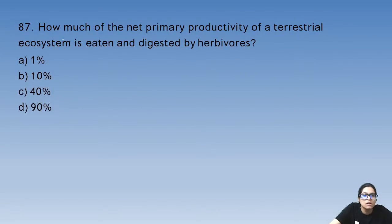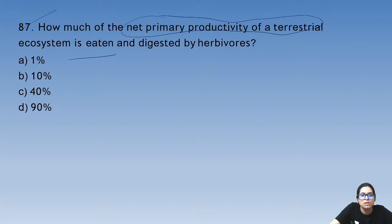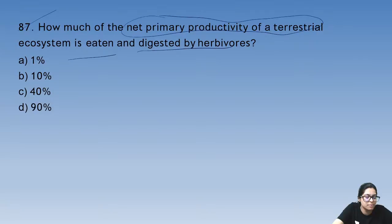Question 87: how much of the net primary productivity of a terrestrial ecosystem is eaten and digested by herbivores? It is 10 percent.